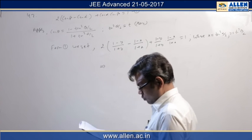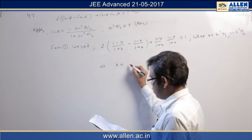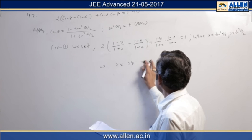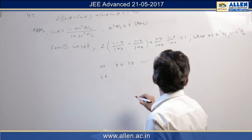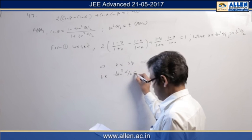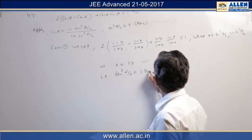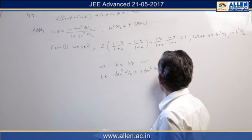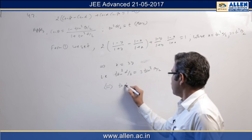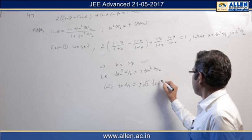Which after simplifying, this will become x equal to 3y, that is tan square alpha by 2 equal to 3 tan square beta by 2, which is equivalent to tan alpha by 2 equal to plus minus root 3 tan beta by 2.